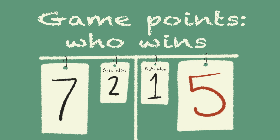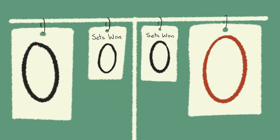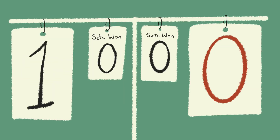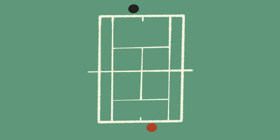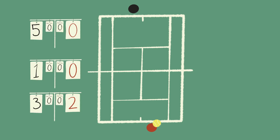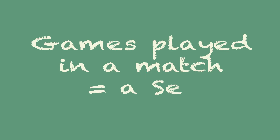That leads to game points. These are scored with numbers such as 1, 2, 3, and so on. When the score equals an odd number — such as 0 to 1, 2 to 3, or 0 to 5 — the teams switch sides and servers. The number of games played is called a set.